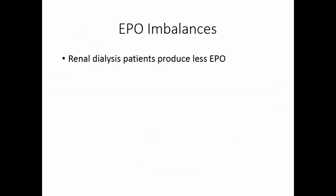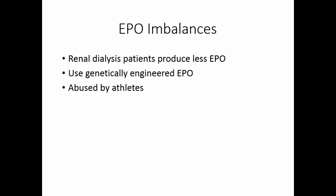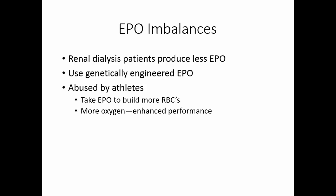Erythropoietin is reduced in renal dialysis patients. There is a genetically engineered form of erythropoietin that can be given to these patients to keep their red cell values normal. Erythropoietin has been abused by athletes to stimulate more red blood cell production and increase oxygen-carrying capacity to enhance performance. There are dangers: red blood cells are responsible for blood viscosity, so more red blood cells means higher blood viscosity.